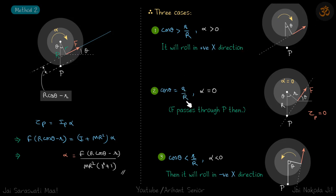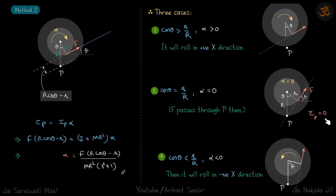Case 2: when cos(theta) equals r/R, alpha equals zero. This occurs when the line of action of force passes through point P, giving zero torque about P. Geometrically, the angle theta in the diagram corresponds to cos(theta) equaling small r over capital R — by geometry that angle is also theta — confirming net torque about P is zero and alpha is zero.